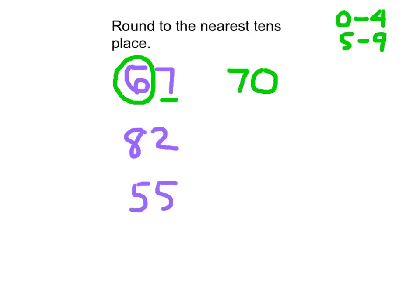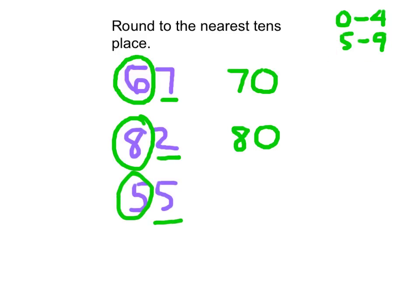Now we do the same thing for 82, where the circled digit is the 8 because that's the tens place. We underline the 2. If that 2 is between 0 and 4, the circled number stays the same, so it stays an 8. Digits to the right change to 0, so 82 is closest to 80. For 55, that's 5 to 9, so we add 1 to the 5, making it a 6, and we zero out as well. So 55 to the nearest tens place is 60.